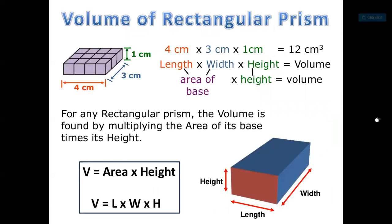To find the volume of the rectangular prism, we just need to multiply the dimensions altogether. In a different way, we need to find the area of the base multiplied by the height, because length times width is the area of the base.